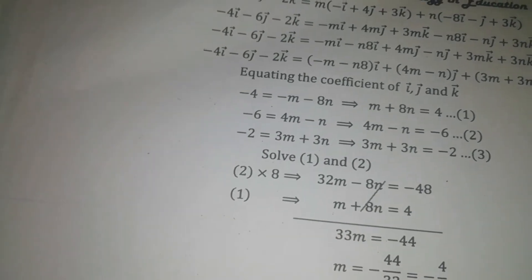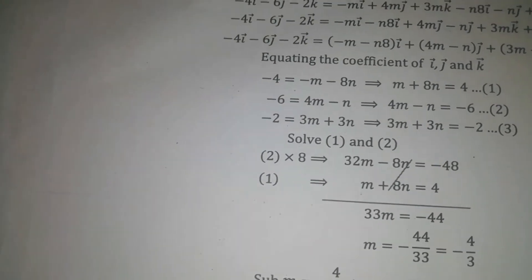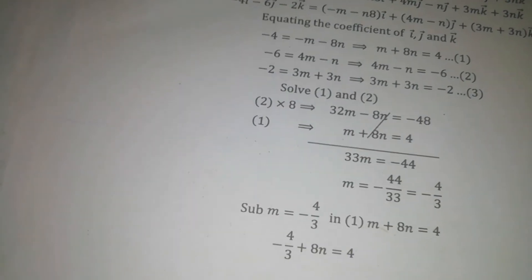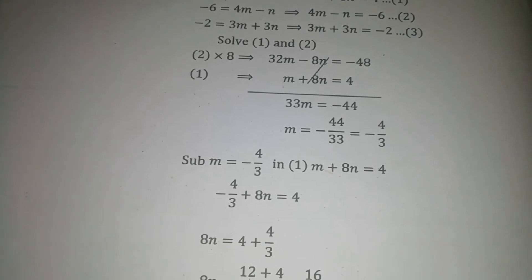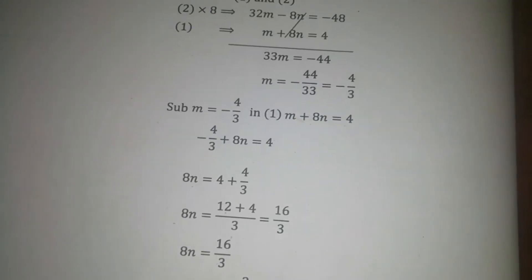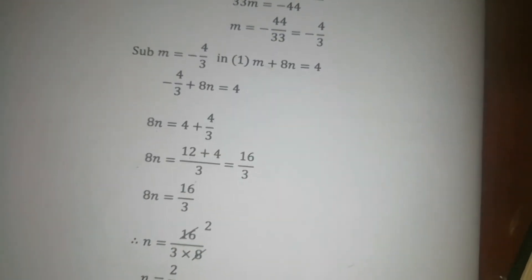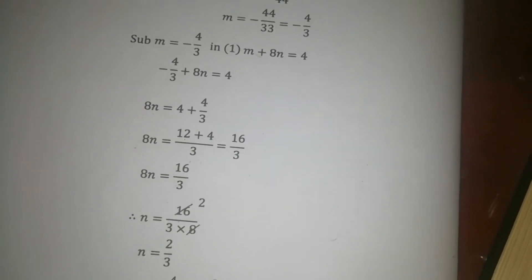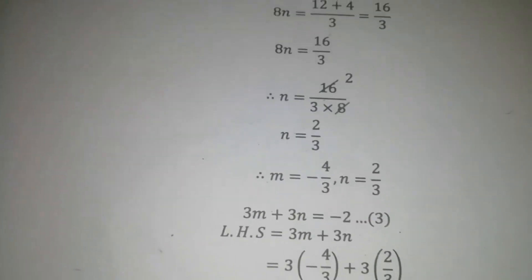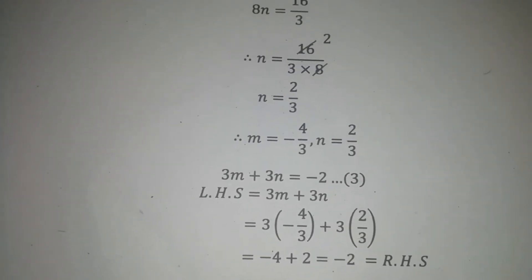You can solve equations 1 and 2. We get M equal to minus 4 by 3. To find N: substitute the M value into M plus 8N equal to 4. After simplification we get N equal to 2 by 3. Now substitute M and N values into the third equation — 3M plus N — and we can verify the RHS equals minus 2.